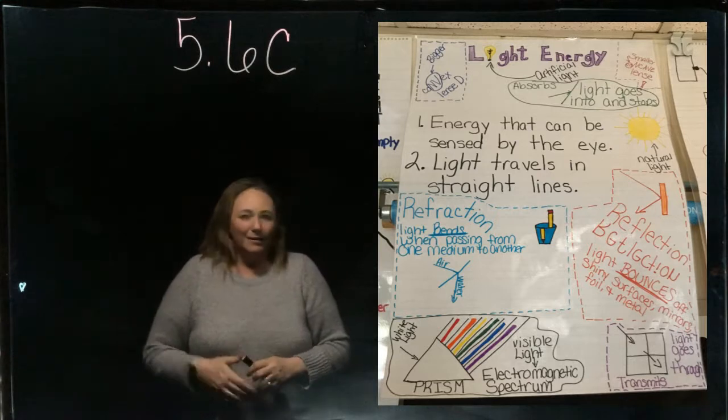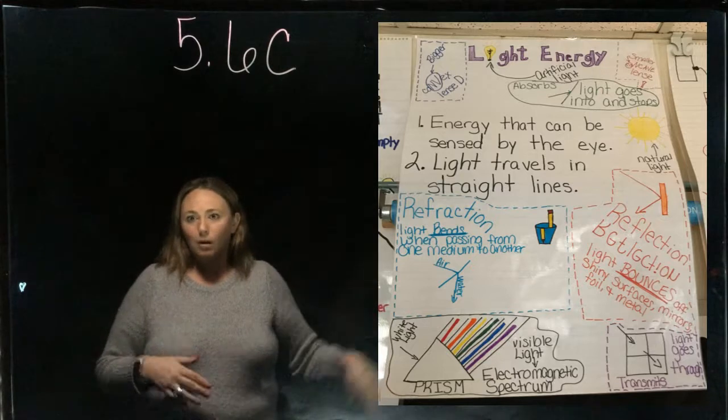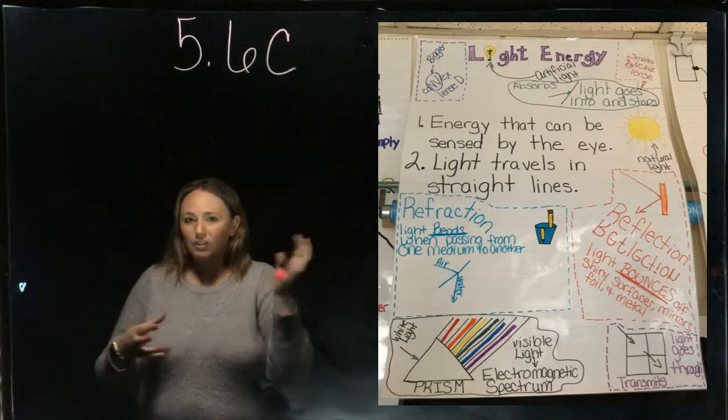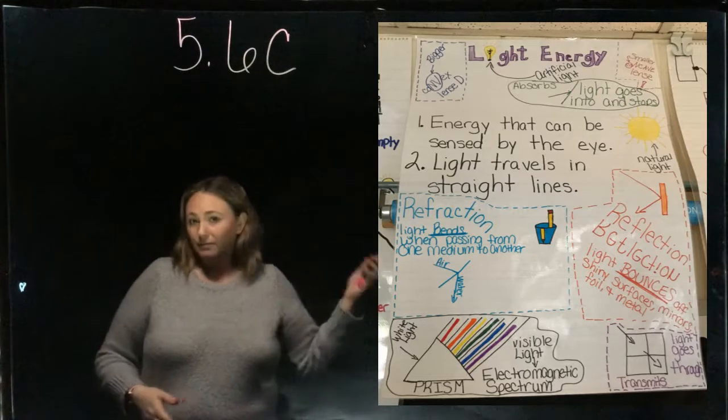And then the last one: when light travels and it hits an object, like definitely a black wall or a black chair, it just absorbs it. It doesn't go anywhere, it can't pass through it, it doesn't reflect back, and it definitely doesn't refract. It just absorbs it.